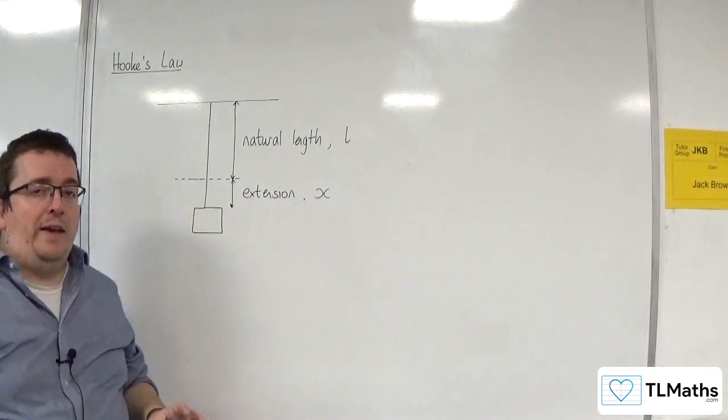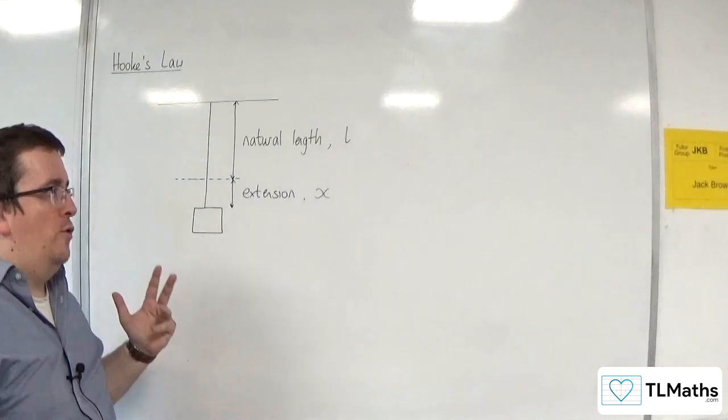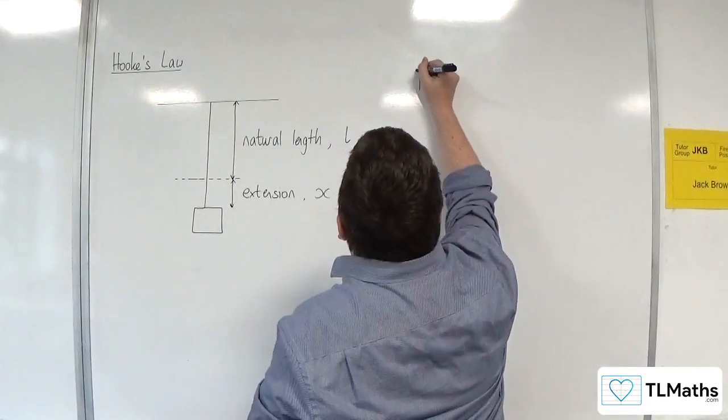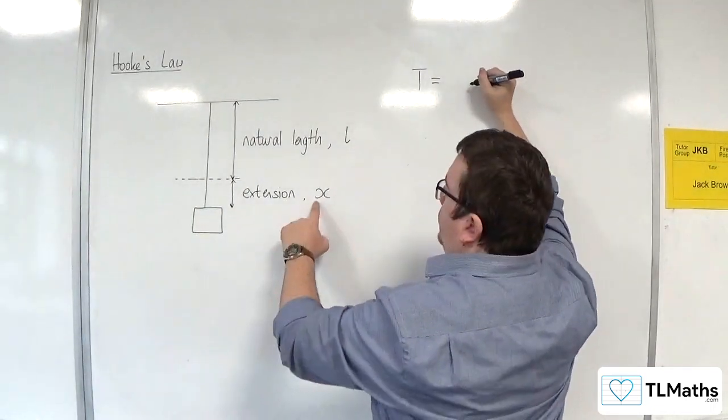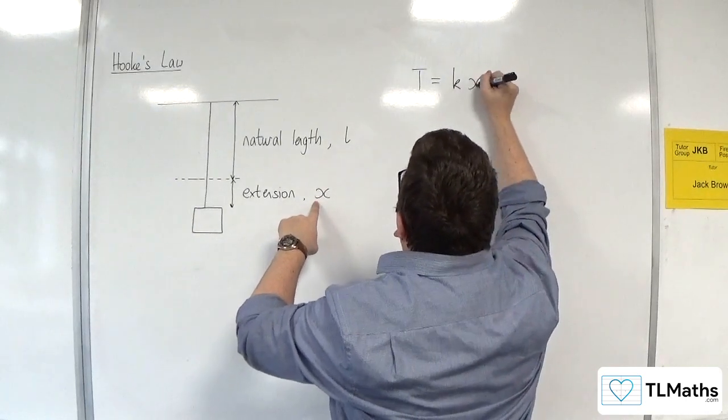And Hooke's Law, what it says is that the tension in your string or your spring is proportional to the extension X. So it's equal to K times X.